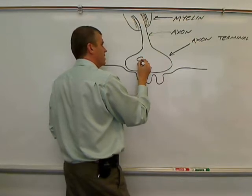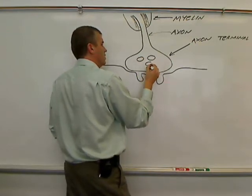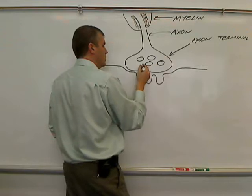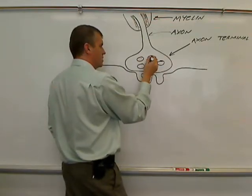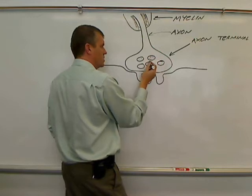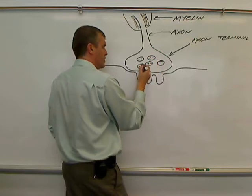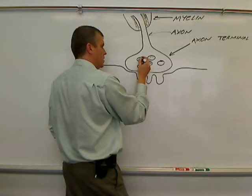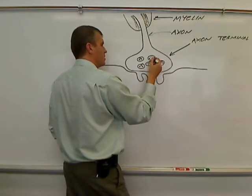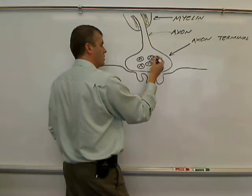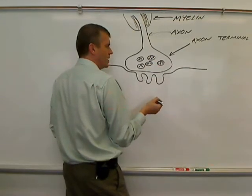Inside of the axon terminal, there will be vesicles, and those vesicles contain neurotransmitter. In this case, the neurotransmitter is the neurotransmitter of muscle contraction, acetylcholine.